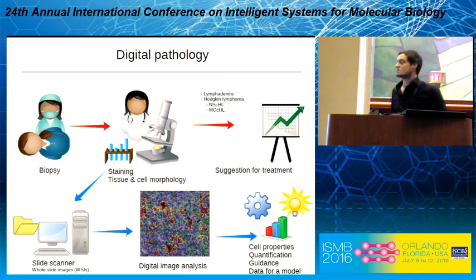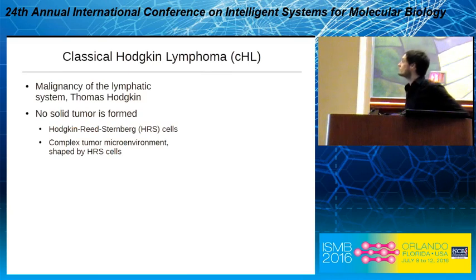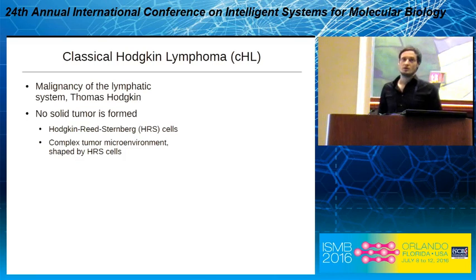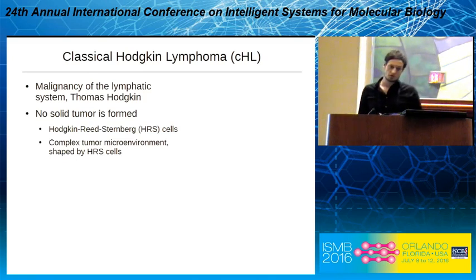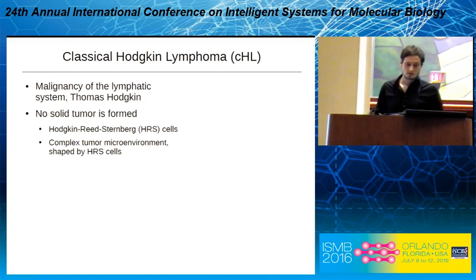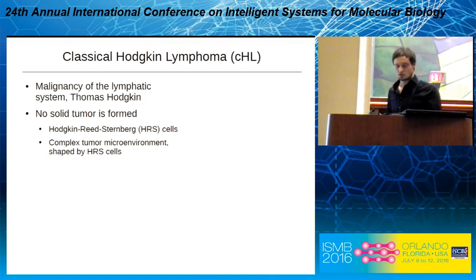We use them for digital image analysis. Hodgkin lymphoma is a malignancy of the lymphatic system, first described by Thomas Hodgkin. Like in leukemia lymphoma, there is no solid tumor, but you get a distribution of HRS cells, which are typical for the disease in the tissue. Hodgkin lymphoma is characterized by a complex tumor microenvironment, and it's known that these HRS cells also actively shape this microenvironment and need it to survive.